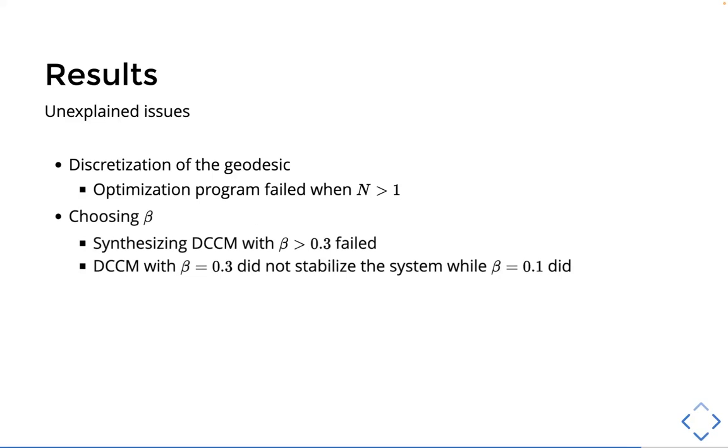And another very peculiar observation of the implementation was that the synthesis of the DCCM consistently failed when using a beta greater than 0.3. And this is strange because one would think that it would be strictly easier to satisfy a slower convergence rate enforced by the larger beta. But something is going on here. And another interesting thing is that while I was able to synthesize the DCCM with 500 samples from both beta 0.1 and 0.3, the beta 0.1 controller was able to stabilize the system while the beta 0.3 controller was not.